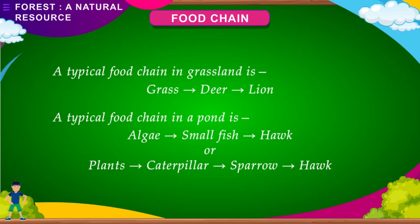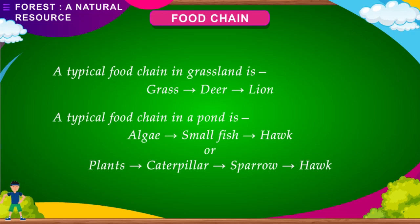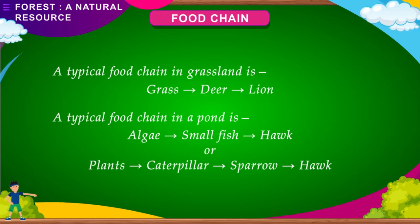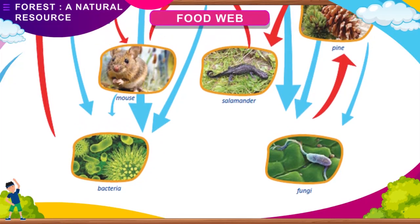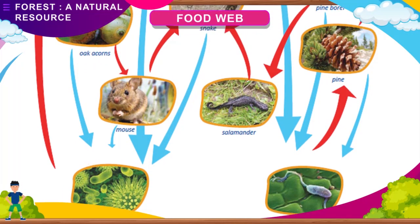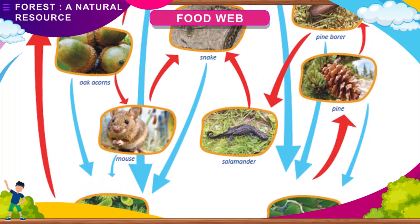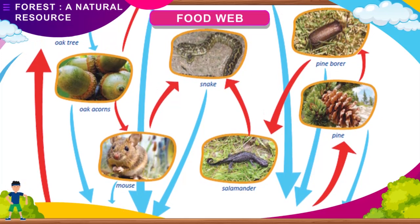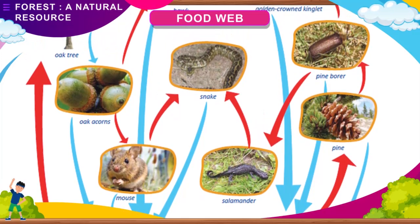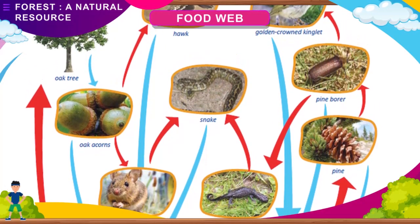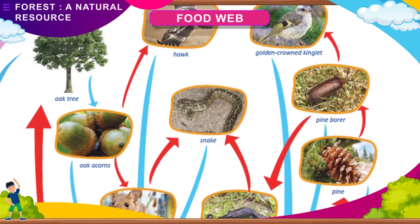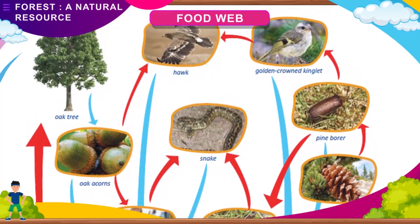A typical food chain in a pond is: algae → small fish → hawk. Or: plants → caterpillar → sparrow → hawk. In nature, there are several food chains that are connected to each other — all food chains are interlinked. This interconnected network of food chains is called a food web.